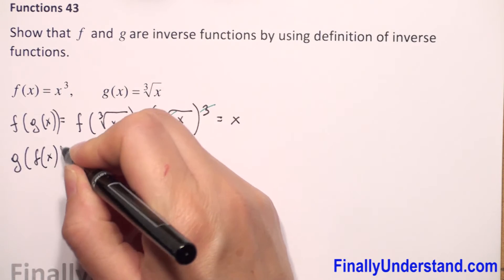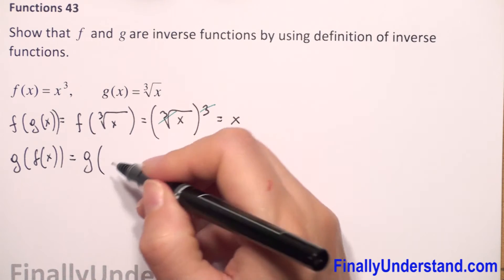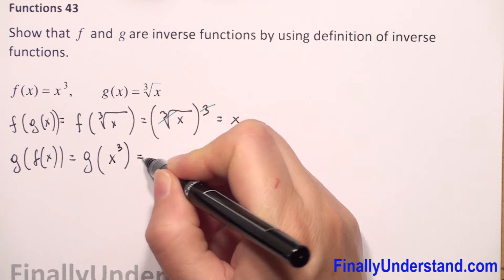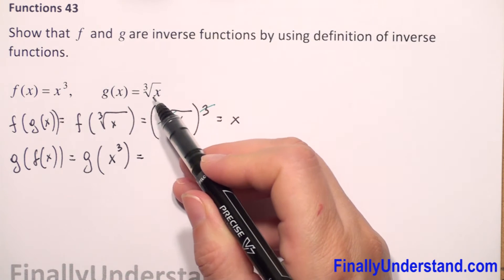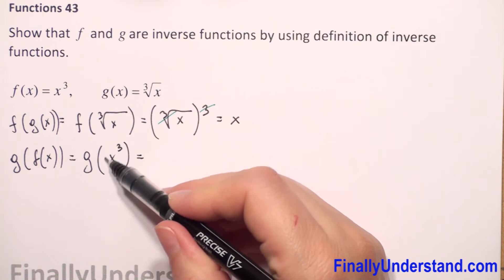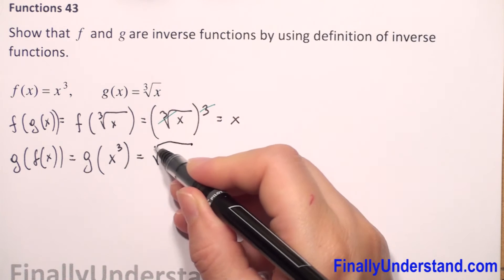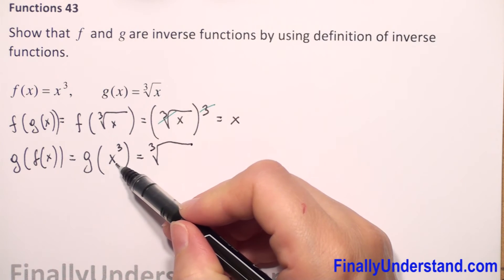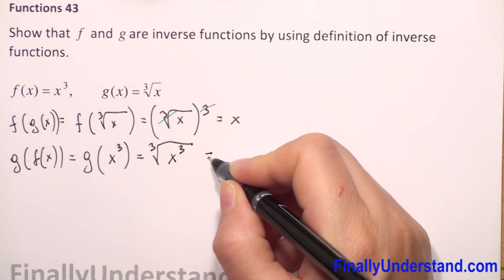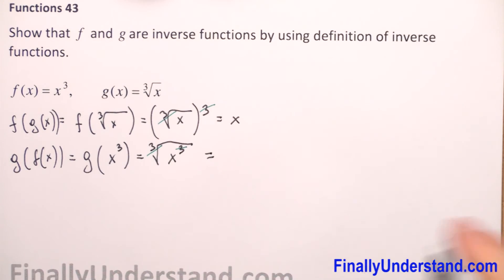Now we check if g composition of f is also equal to the identity function. We have g(f(x)) where f(x) = x³. Applying the formula of our g function, we substitute x with x³, giving us the cube root of x³. Again, the cube root reduces with the exponent three.